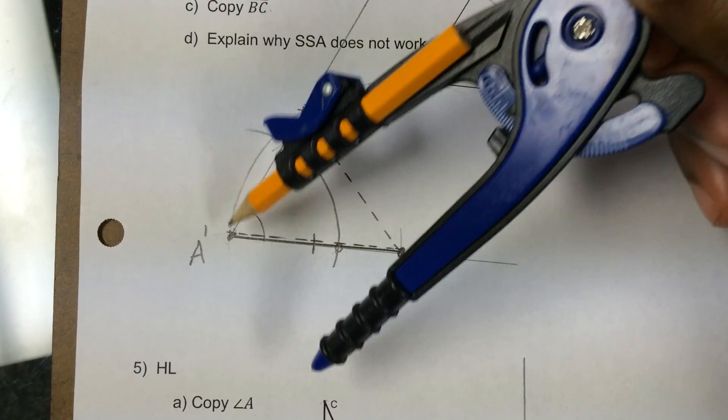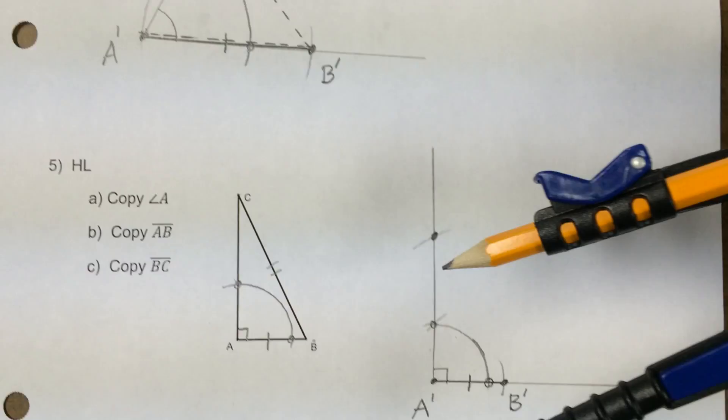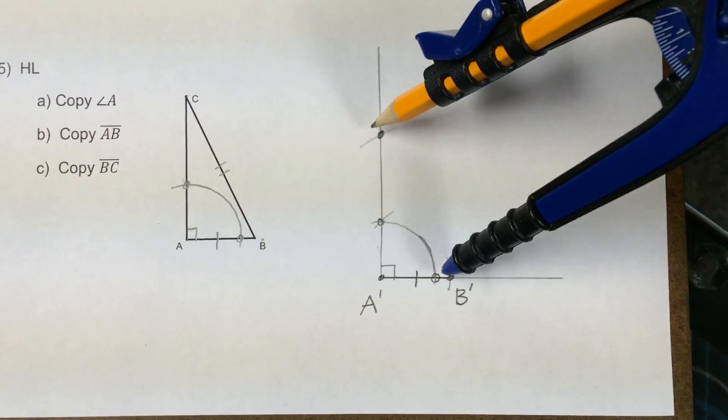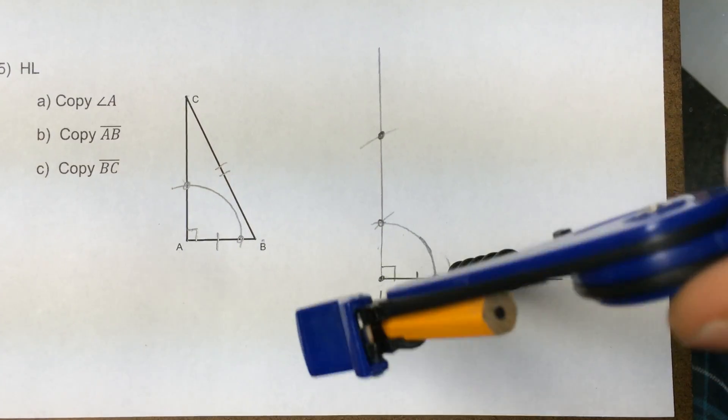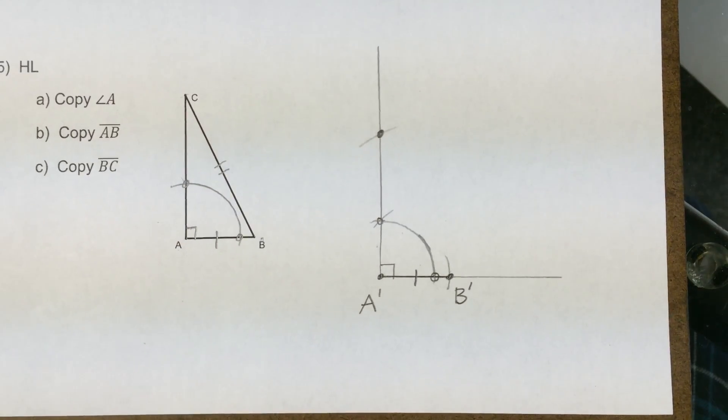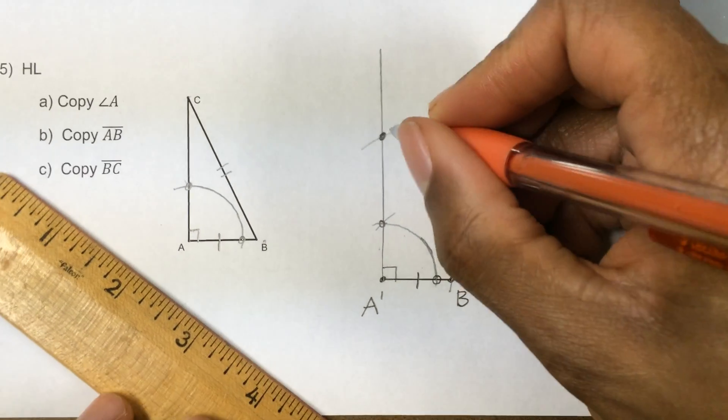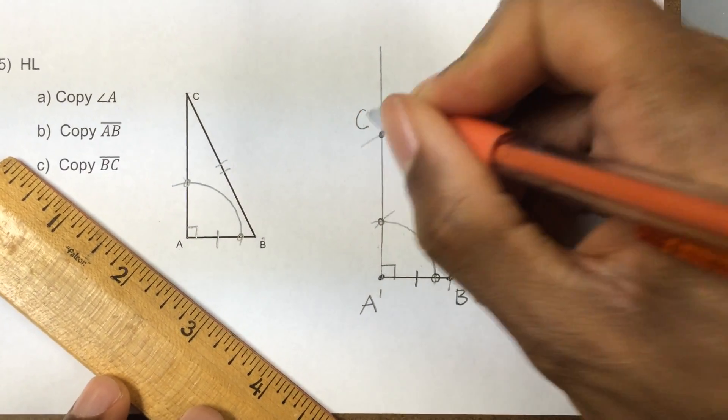Like when we did side-side angle, it could either hit here or here. But now that we're doing hypotenuse leg, it's only going to hit one place. I could keep going all I want, but it's never going to reach again. So it's definitely, this is going to be my point C.